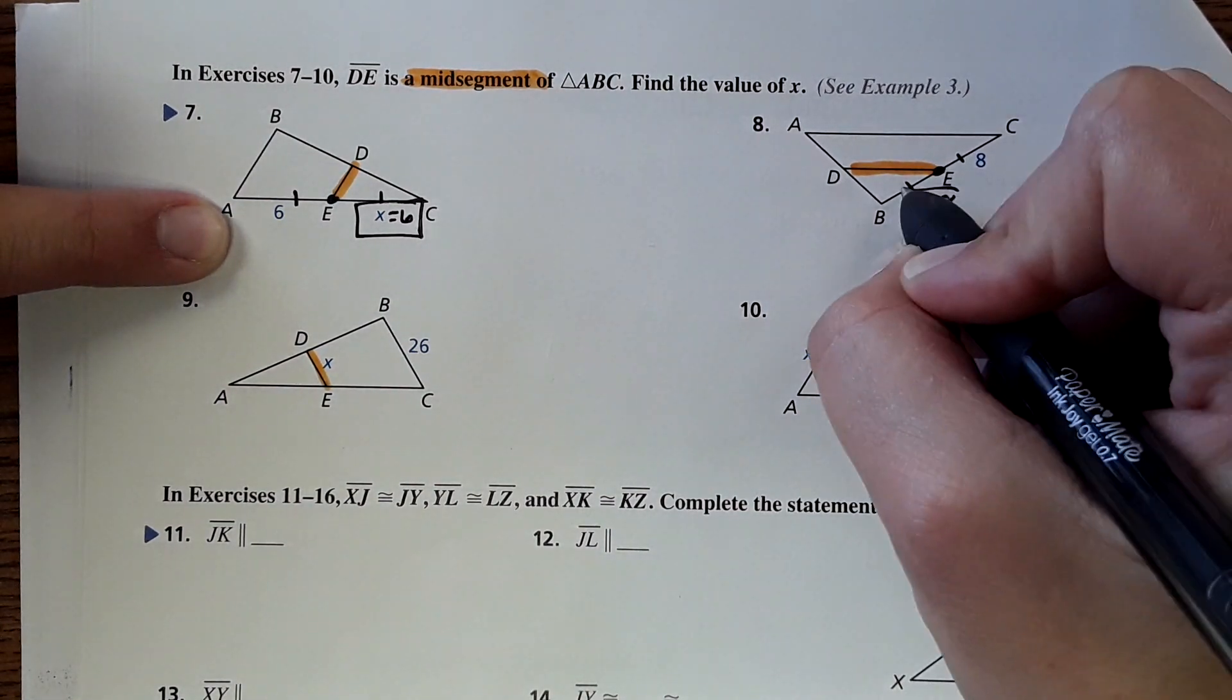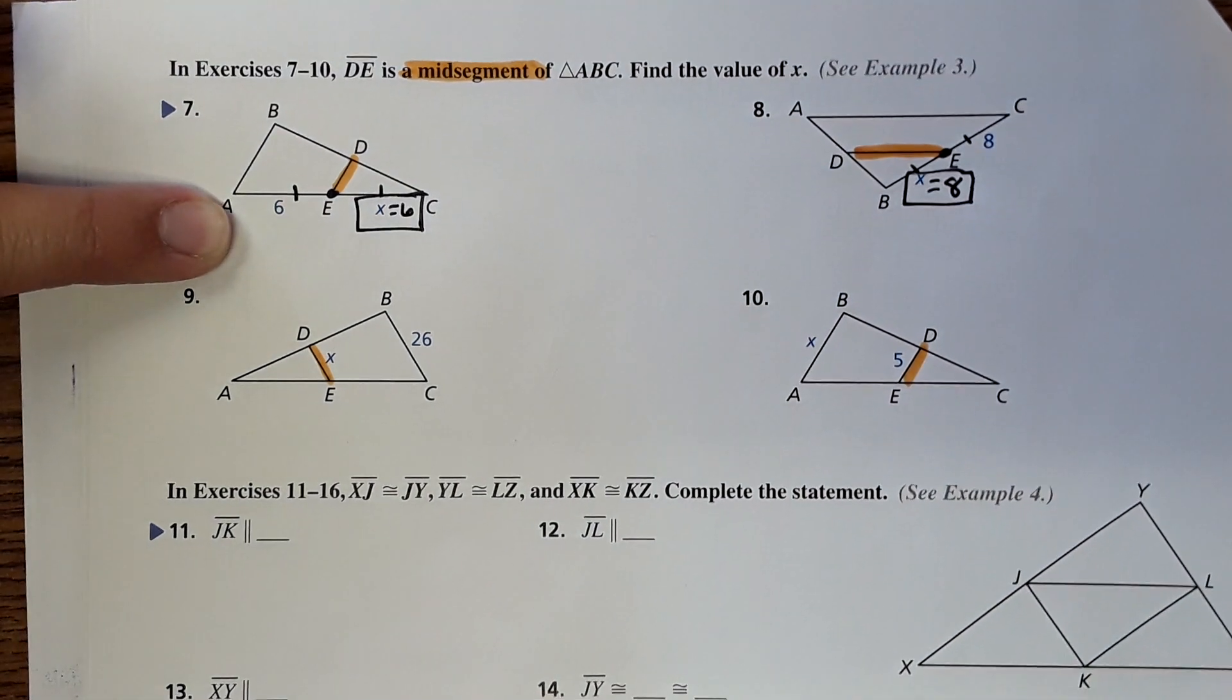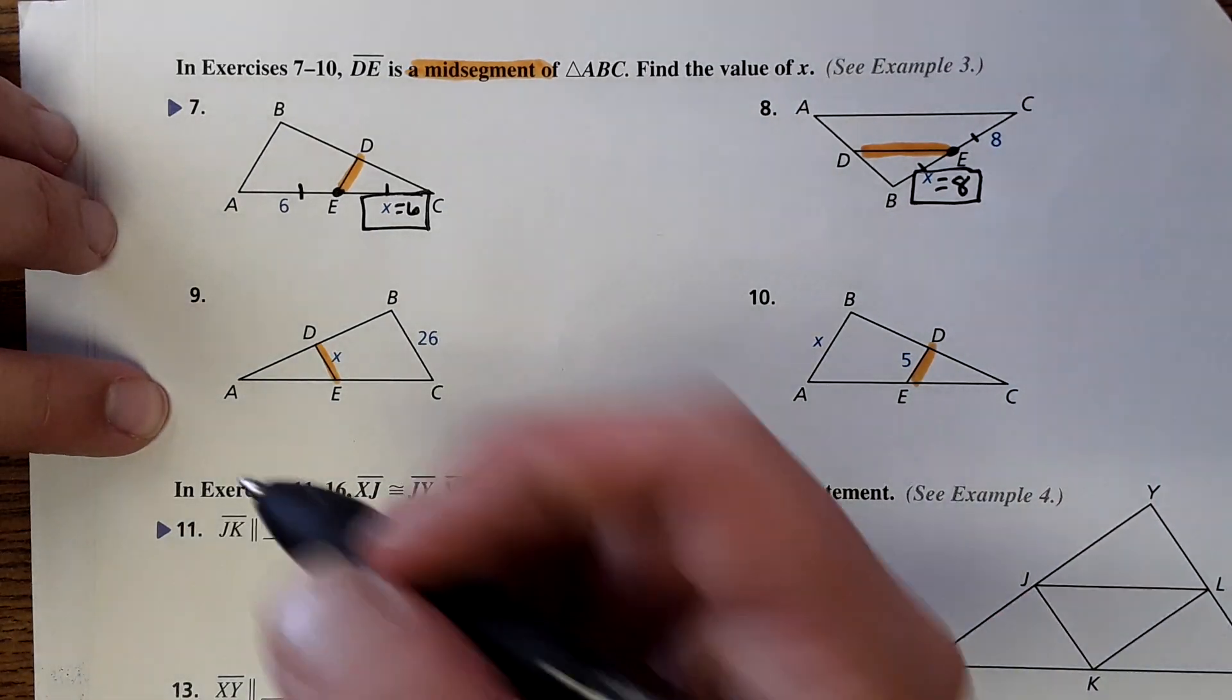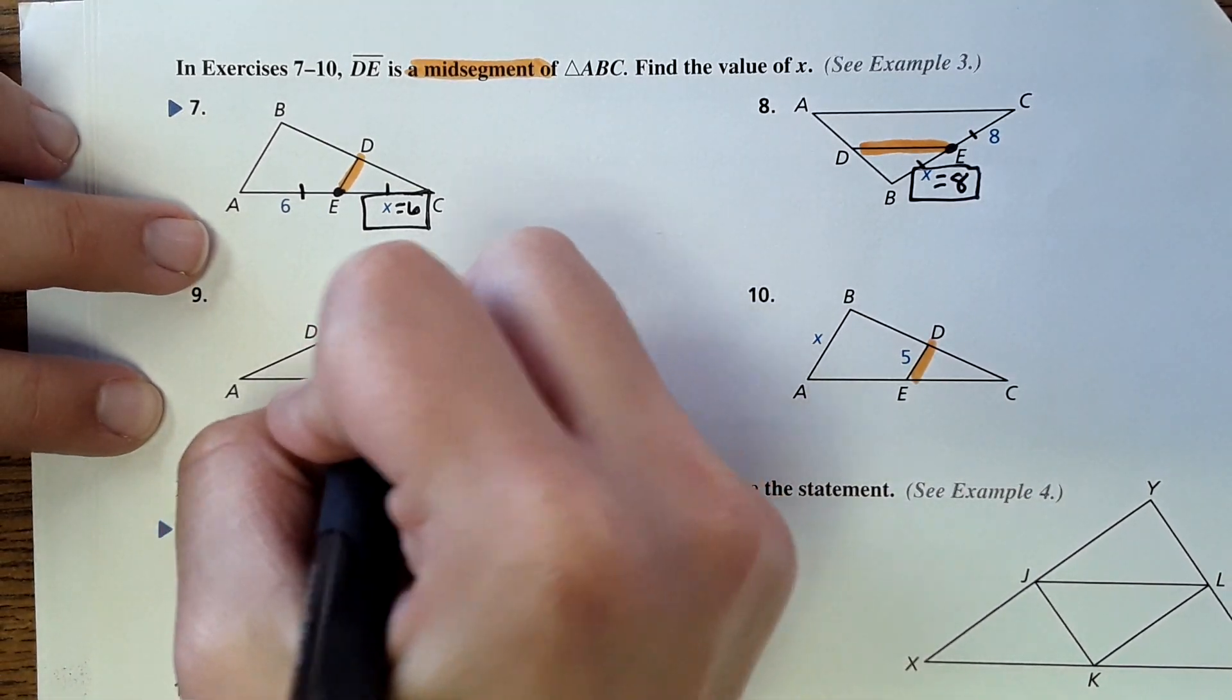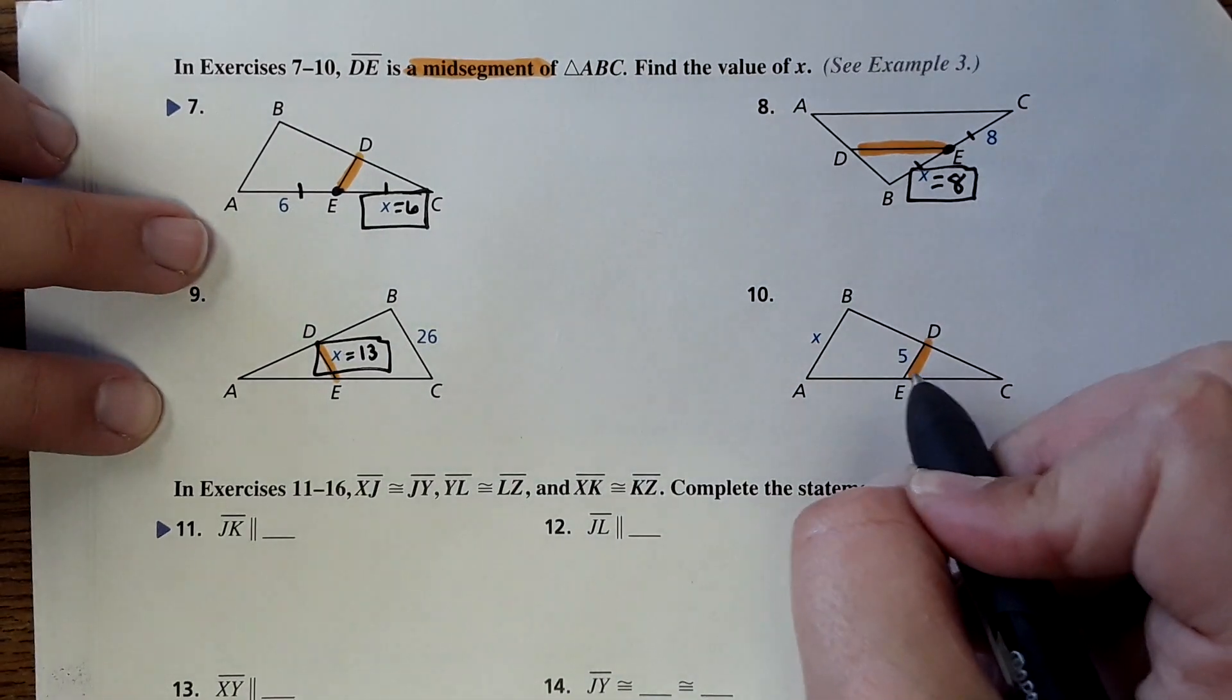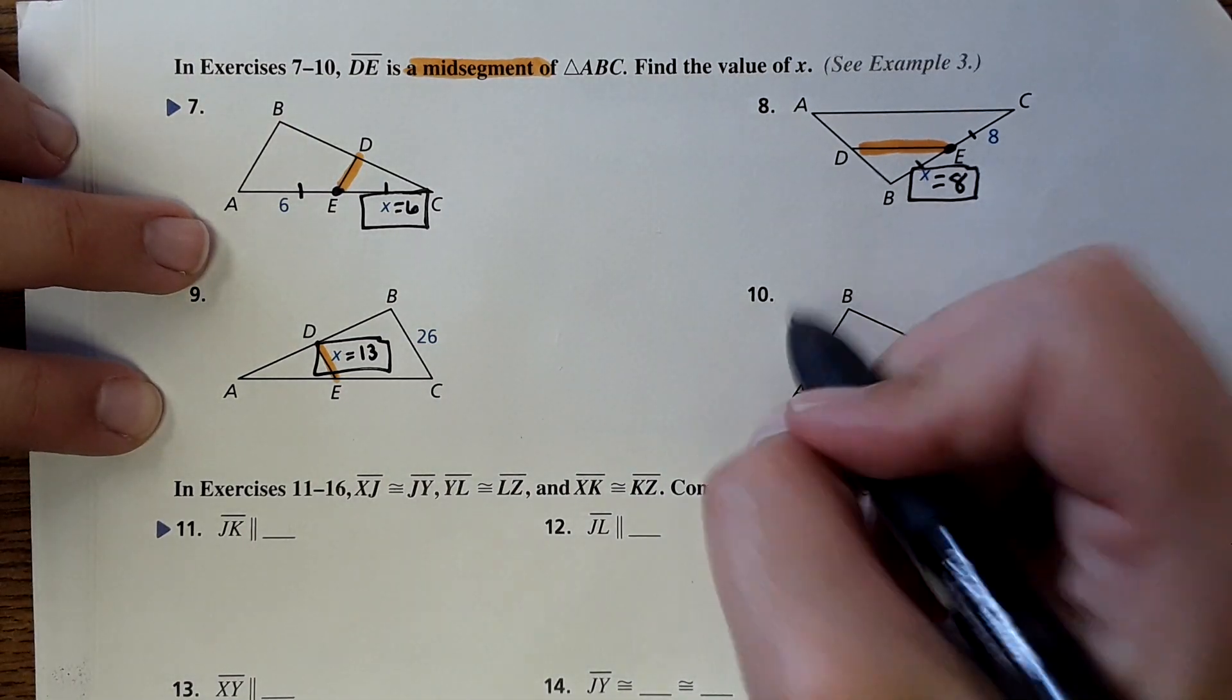And then for number nine the mid segment would be half of this length, so this would be thirteen. And then for number ten, this is five, then this is going to be double that, so it would be ten.